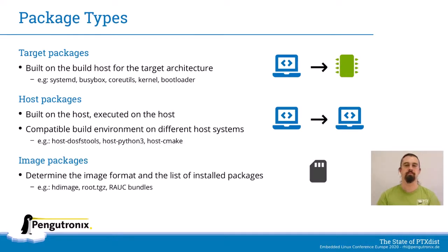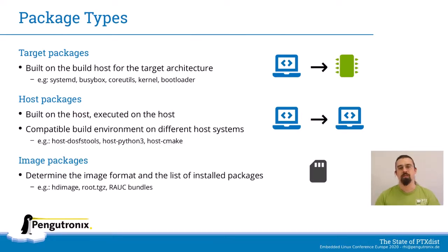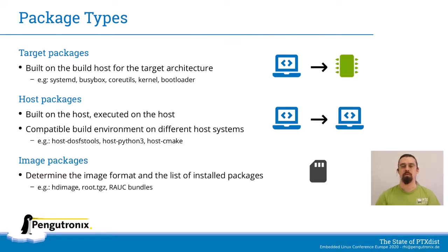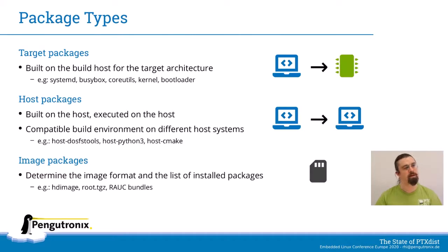For packages, there are different types. If you want some software on the target, that would be a target package, of course, which is built on the host for the target architecture — like systemd, BusyBox, CoreUtils, and so on. You have to use a cross compiler for that. On the other hand, you need some host packages too, which are compiled and run on the host. For example, maybe you want to build a VFAT image, or something needs to use Python or CMake as a build system. In this case, we would build the respective packages for the host to be independent from the host system, so we can run on older Debian and CentOS hosts without any problems finding the software we need.